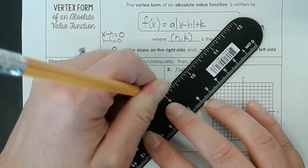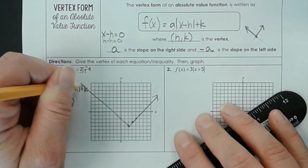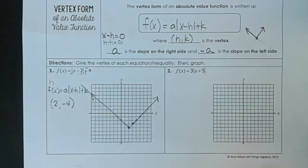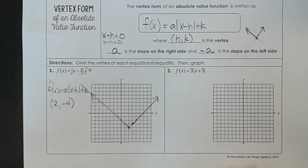And then we just connect our points and make our graph. There you go, there's your absolute value function. That was way easier than making a table.